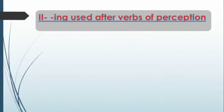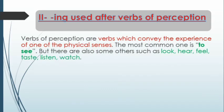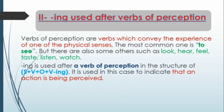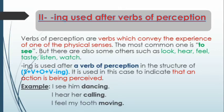ING is also used after verbs of perception such as to see, to look, to hear, to feel, to taste, to listen, to watch, and so on. When we are using a verb of perception, we must follow the structure: subject + verb + object + verb-ING. In this situation, it is used to indicate that an action is being perceived. For example: 'I see him dancing,' 'I hear her calling,' 'I feel my tooth moving.' When I say 'I see him dancing,' it means that there is an action being perceived by me.